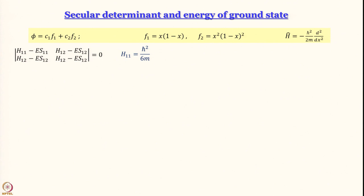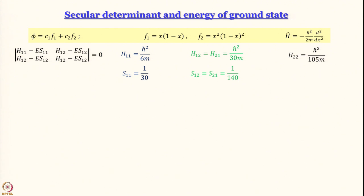H_11 turns out to be h-bar squared divided by 6m. You can prove that H_21 equals H_12 equals h-bar squared over 30m, H_22 equals h-bar squared over 105m, S_11 equals 1/30, S_12 equals S_21 by symmetry of the overlap integral, and H_12 equals H_21 by the turnover rule since H is a Hermitian operator. Then S_22 is also determined.